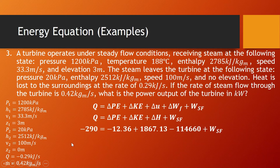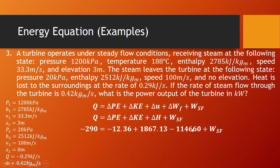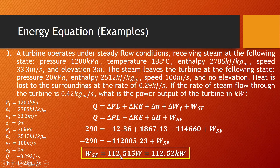Q is negative 290 watts (converting negative 0.29 kilojoule per second by multiplying by 1,000). So: negative 290 equals negative 12.36 (PE) plus 1,867.13 (KE) plus negative 114,660 (enthalpy) plus the steady flow work. These values equate to negative 112,805.23, so our steady flow work is equal to 112,515 watts, or dividing by 1,000, that is 112.52 kilowatts.